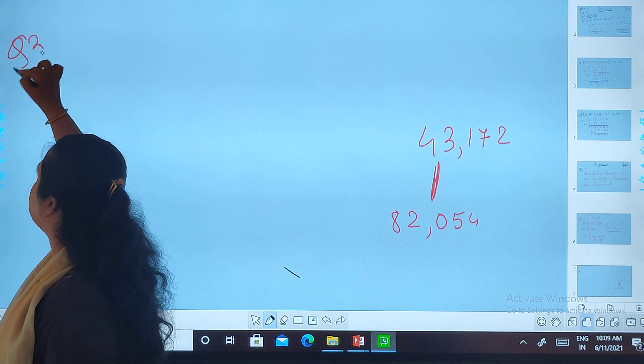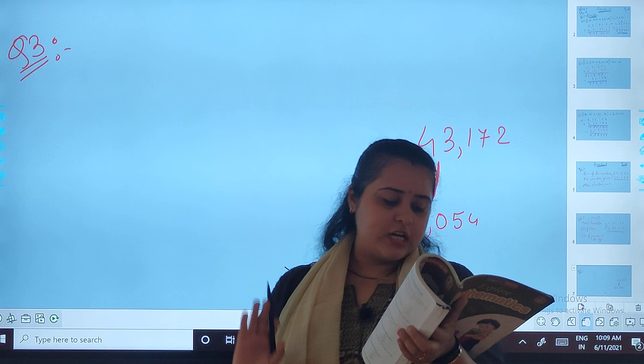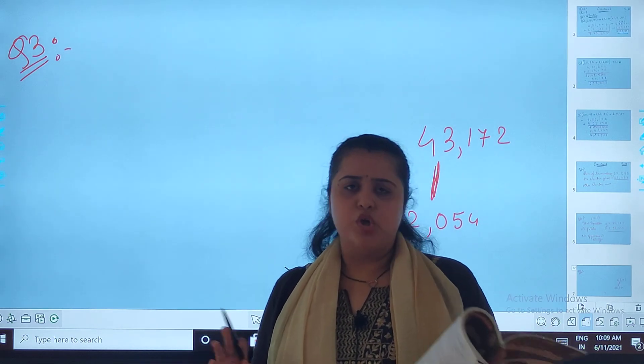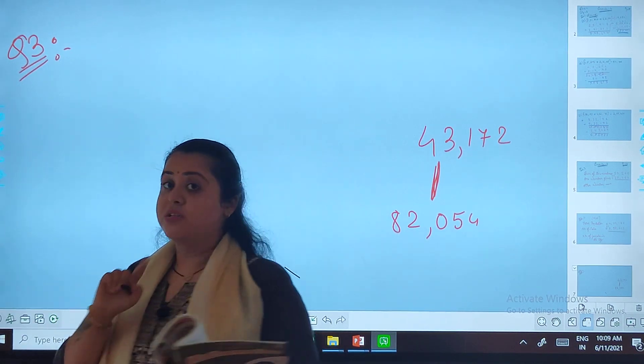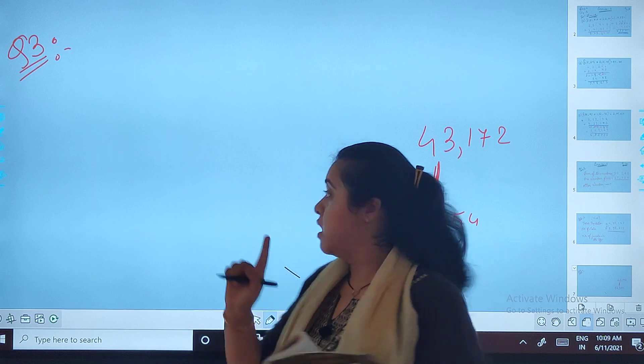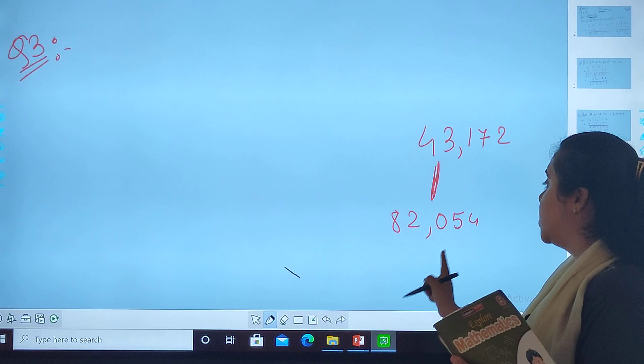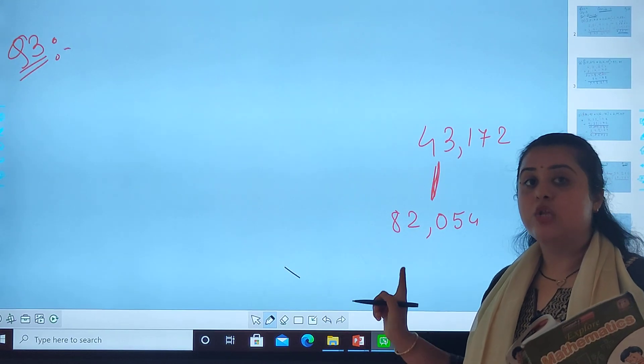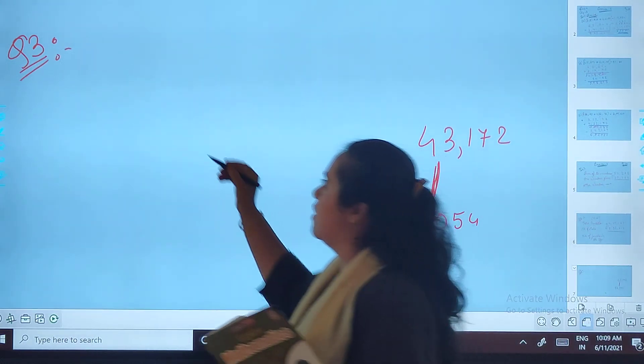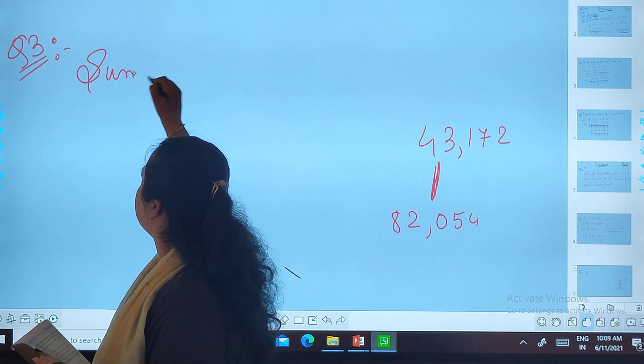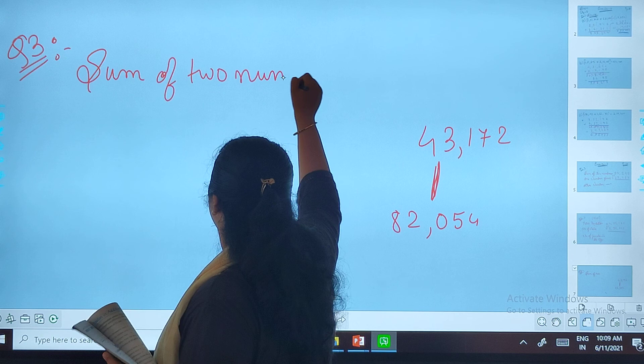So let's solve the question number three with the proper statement. What must be added to 43,172? So you can say this is the first number given. First of all, please remember students, your first number is smaller compared to the second number. Right? The second number is 82,054.